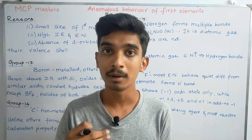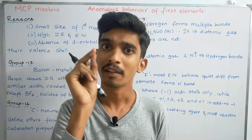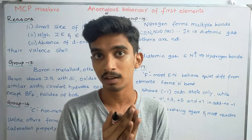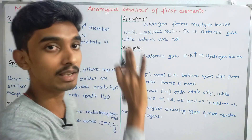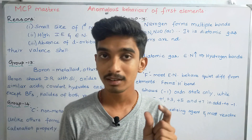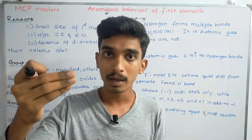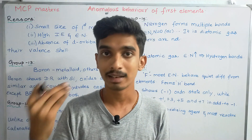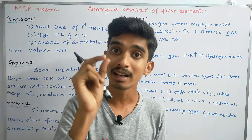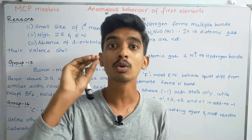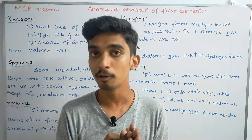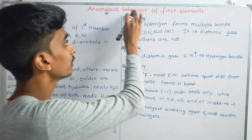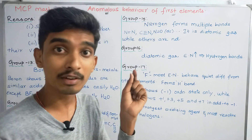In a group, all elements share properties and characteristics. But the first element is quite different — that is called Anomalous Behavior. So why do we look at the first element specifically?